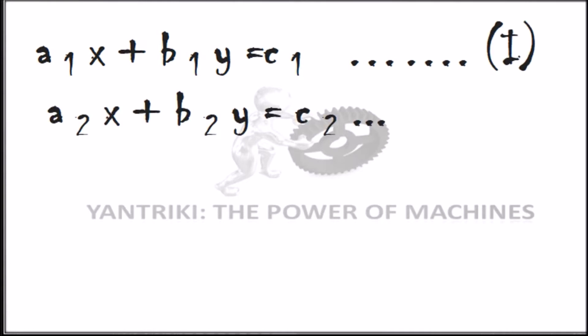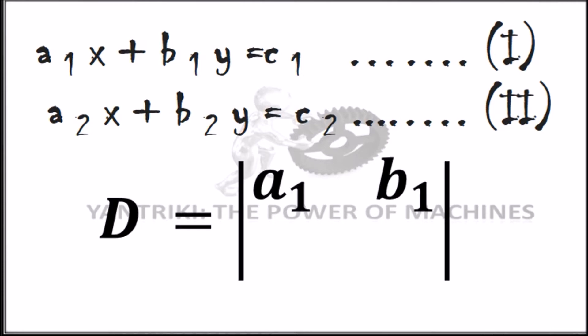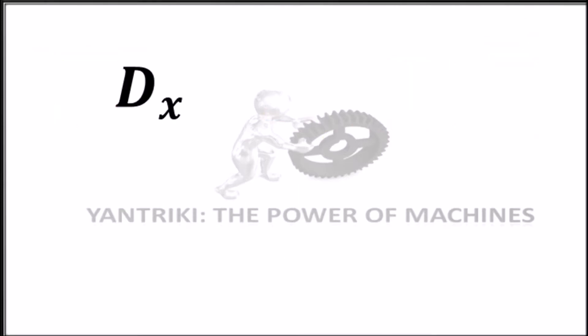We can arrange the equations and, based on them, get the value of D. To calculate D, we eliminate c1 and c2 — we consider only the coefficients of variables x and y. Hence, the value of D will be the matrix [a1, b1; a2, b2].